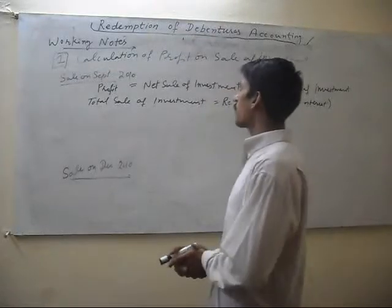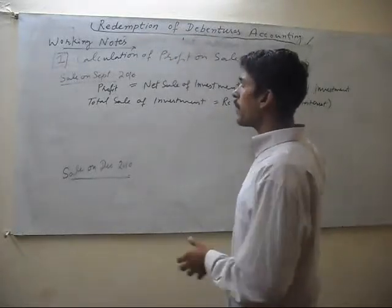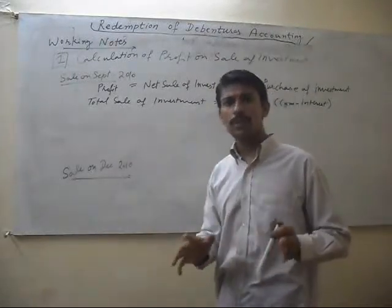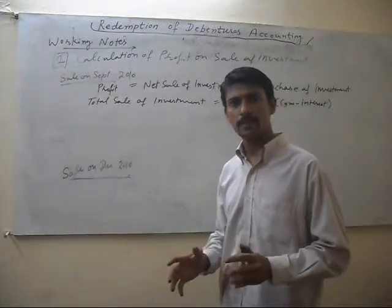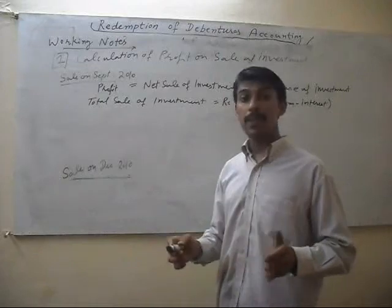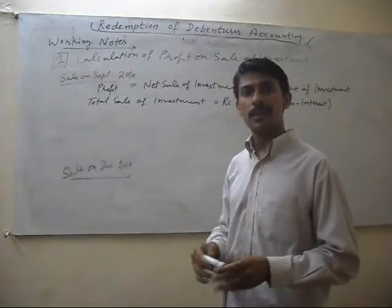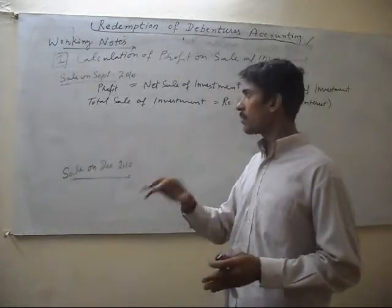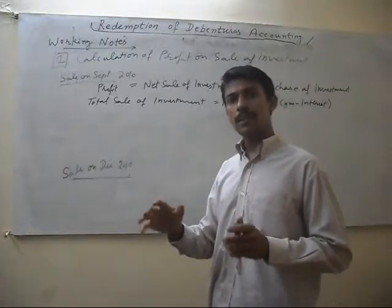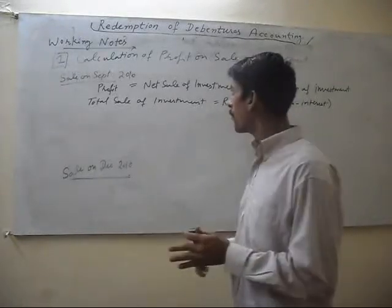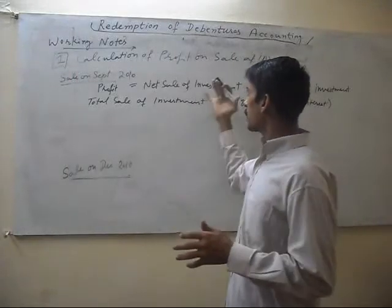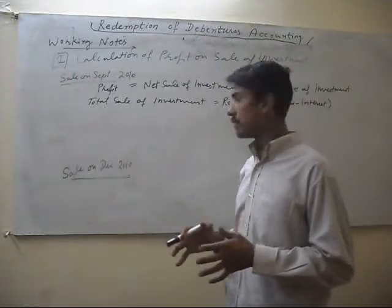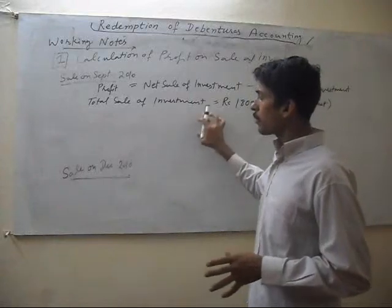Welcome to the second part of redemption of debenture accounting. In this second part, we will calculate the profit on the sale of investment. When a company gets money from debenture holders, at that time the company has to repay those same debenture holders. For this, the company invests some of its profit in a good investment proposal, and after selling this investment, the company pays its debenture holders. So we calculate the profit on this.